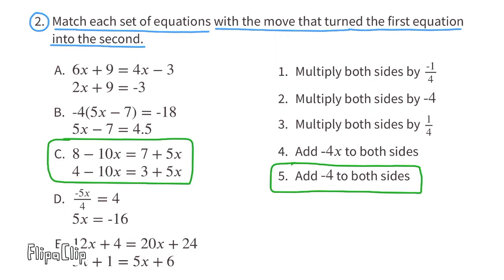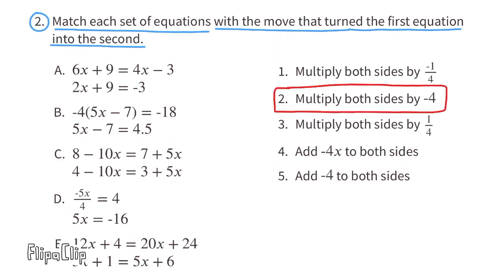Let's look at the right side of equation D. It goes from a 4 to a negative 16. So it becomes 4 times bigger and it becomes a negative. I think both sides must have been multiplied by a negative 4. The moves for 2 match up with the equations for D.